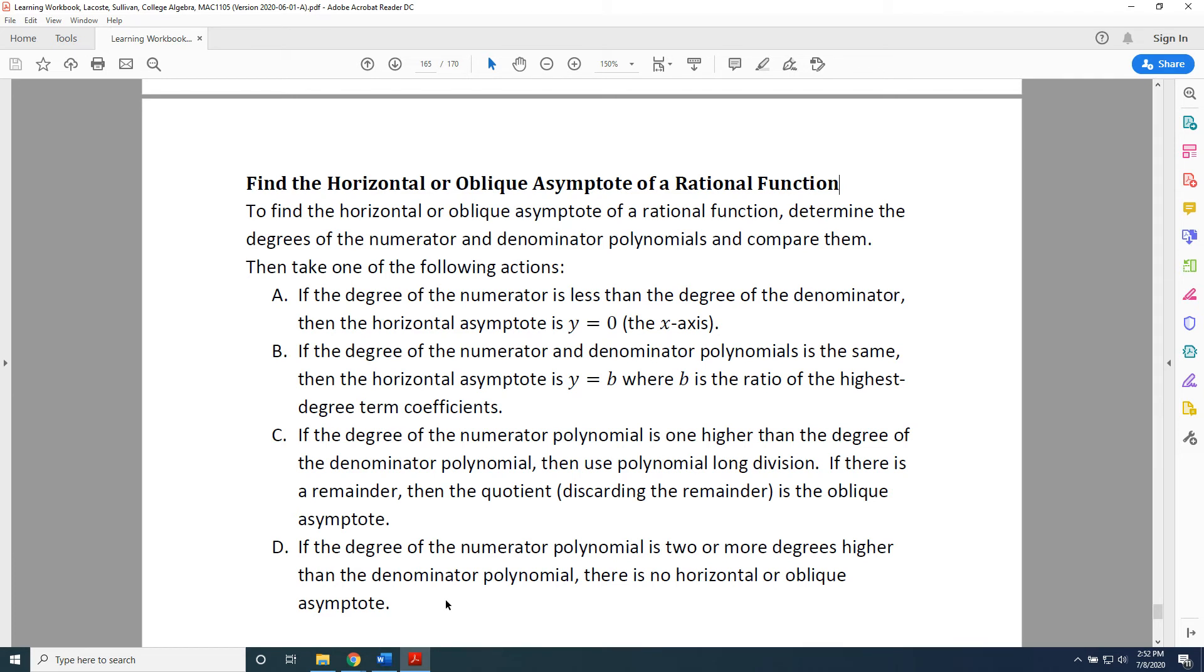First of all, these are actions that you need to memorize. Second, the results of these actions can only produce either one horizontal asymptote, or one oblique asymptote, or no asymptotes at all.